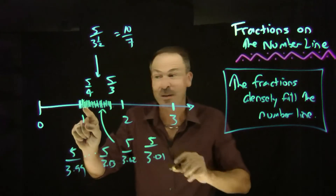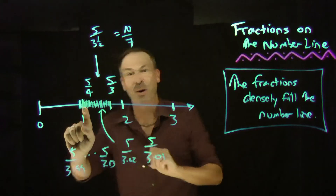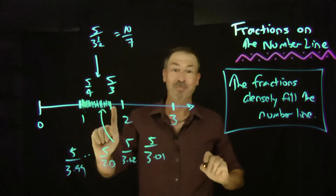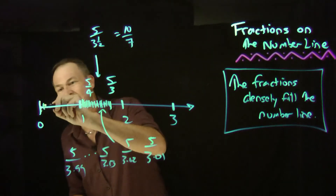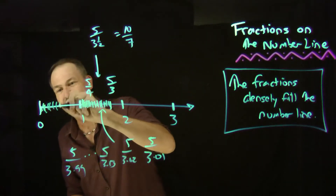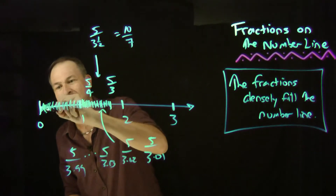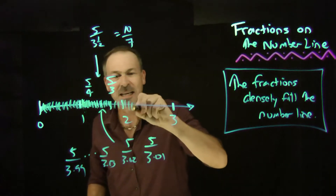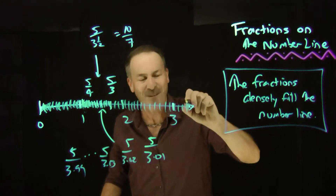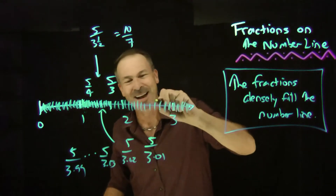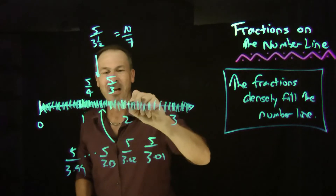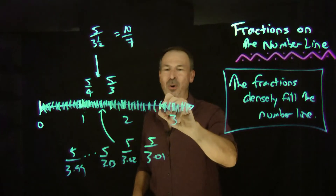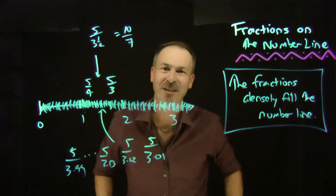Between any two of those, there's a million more fractions to write in between. Between any two of those, there's a million more fractions. It looks like the fractions are filling up the entire number line. The fractions do indeed densely fill the number line.